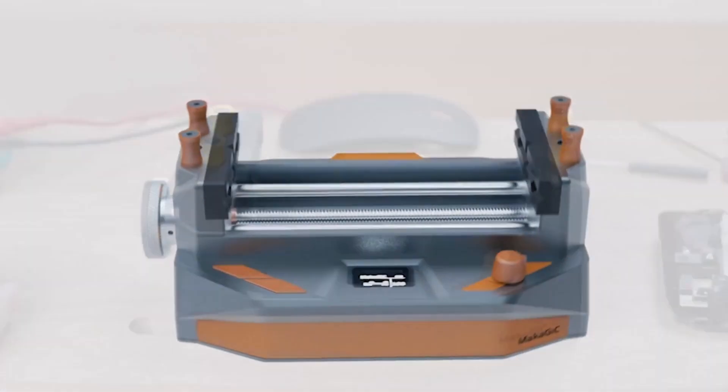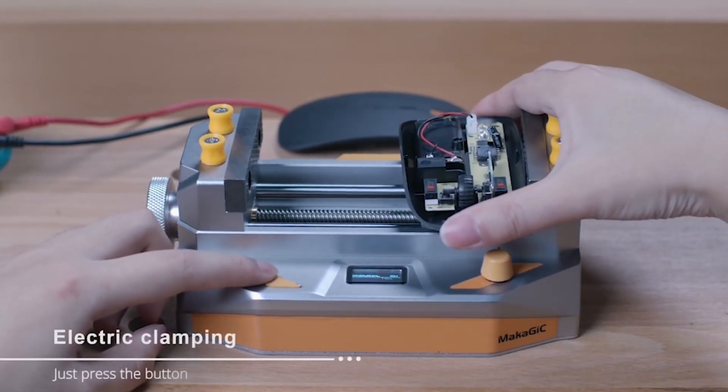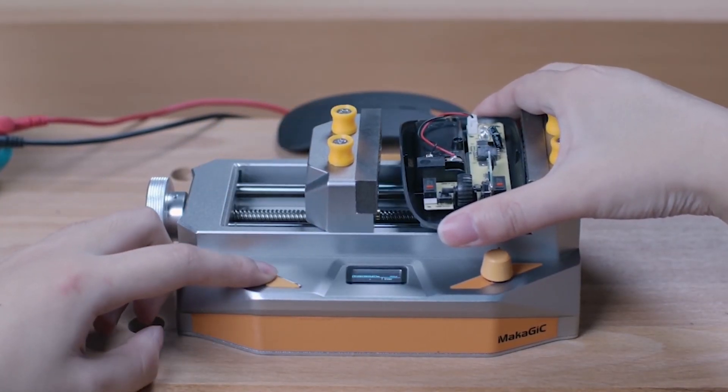Makajik is an electric vise with force adjustment function. You only need to lightly press the button, and it can automatically complete the object holding.